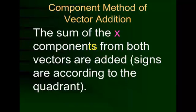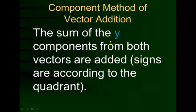If we have two different vectors, we can find their horizontal x-components, line them up on the same axis, and add them — with whatever signs they carry — to find the overall horizontal component. Likewise, we find the y-component of both vectors and add the two vertical components together to find the resultant vector's y-component.